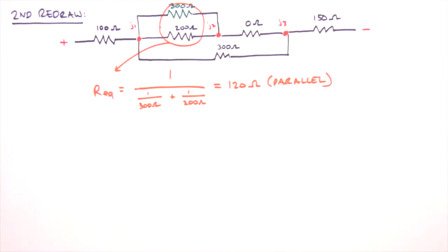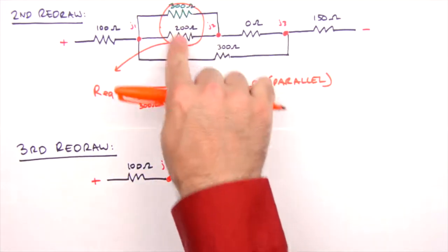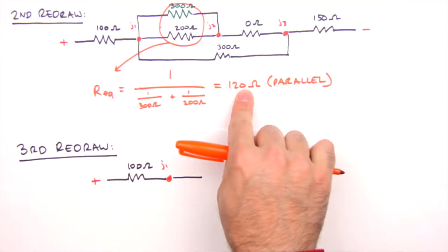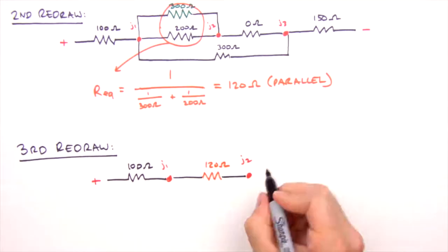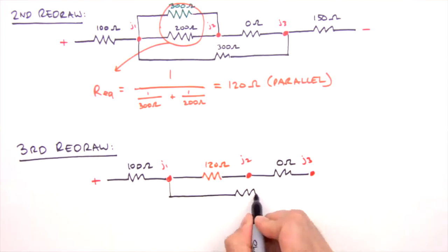Okay, moving on to our third redraw. Here we'll have the same circuit as depicted in the second redraw, except that we replace the 300 and 200 Ohm resistors with their resistive equivalent, a single 120 Ohm resistor. Starting to get the hang of this? If not, don't panic. We've got a couple more redraws with which to practice before we're done breaking it down.